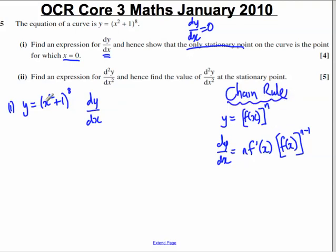We've got very similar going on here. f of x, in this case, is simply equal to x squared plus 1, and our n is equal to 8.